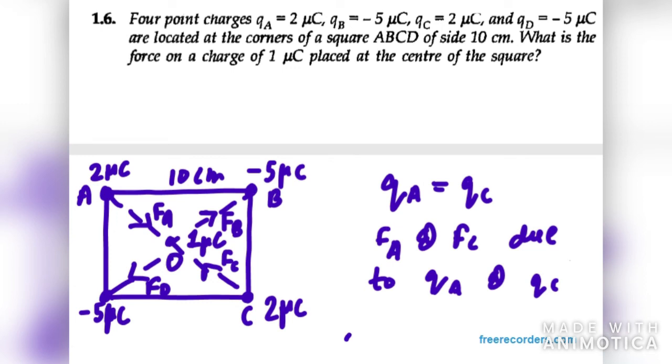Therefore we can say that the net force on the 1 coulomb charge is zero. There won't be any net force on the 1 coulomb charge due to the similar charges present at A and C and B and D. Therefore the net force at O is actually zero. So that's all for question number 6.